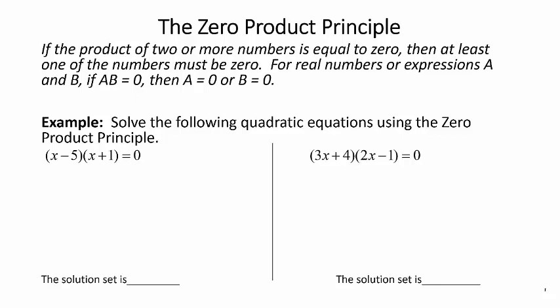So hopefully that makes good intuitive sense to you. If you have zero times anything, it's zero, right? So if you have a product and one of the factors is zero, then the whole product will be zero. We're going to use this to help solve quadratic equations.